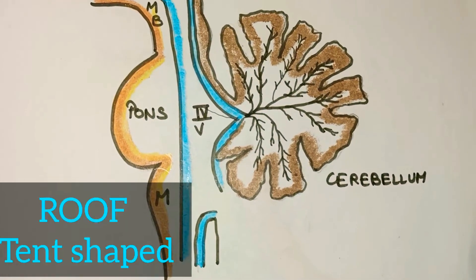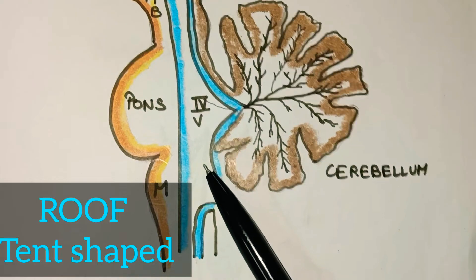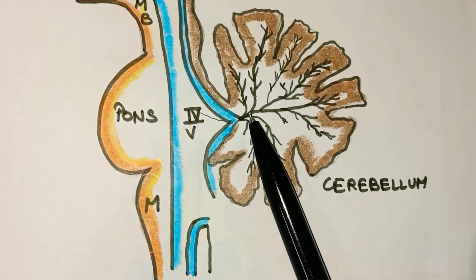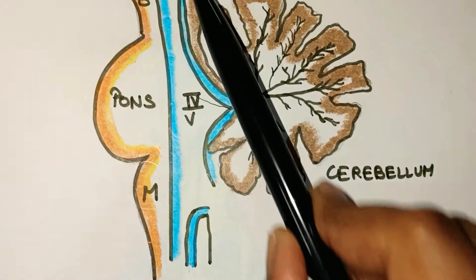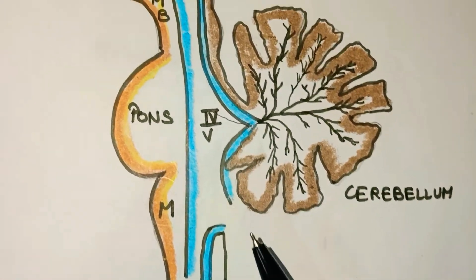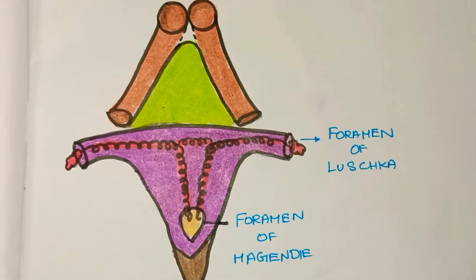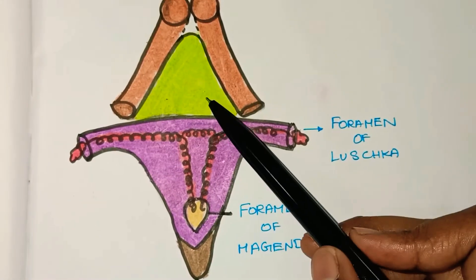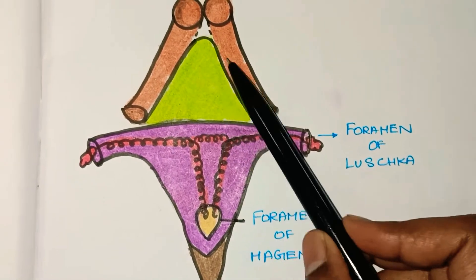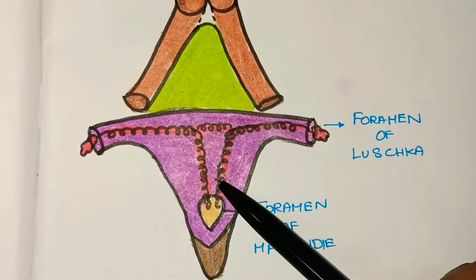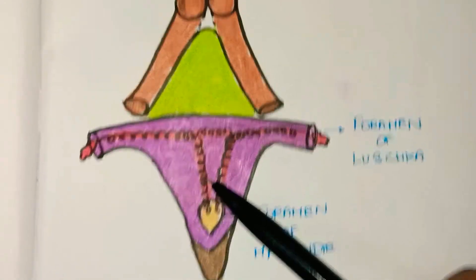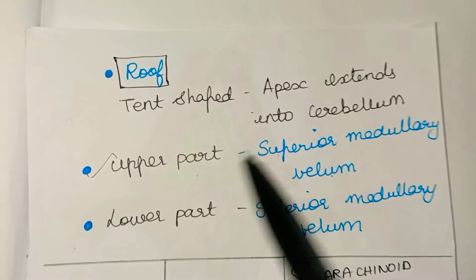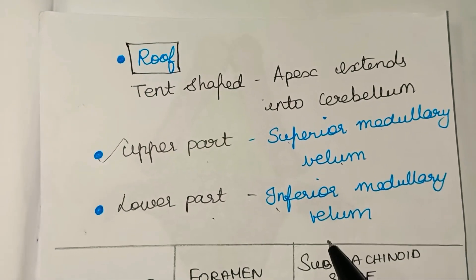The roof of the 4th ventricle is tent-shaped, and its apex extends into the white matter of the cerebellum. It has an upper sloping surface and a lower sloping surface. The upper part is made up of a thin sheet of white matter called the superior medullary velum, and the lower part is made up of a thin sheet of non-nervous tissue called the inferior medullary velum.